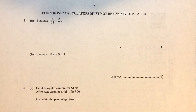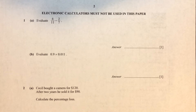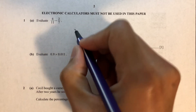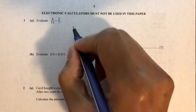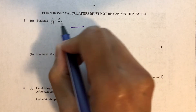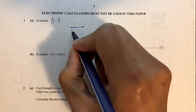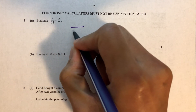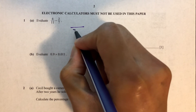Question number one: evaluate 4 over 11 minus 2 over 7. So we have to find a common denominator. The first thing we have to do is multiply those two numbers. So 11 times 7 is 77.